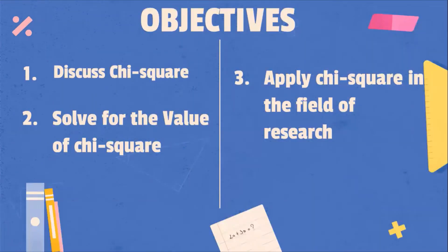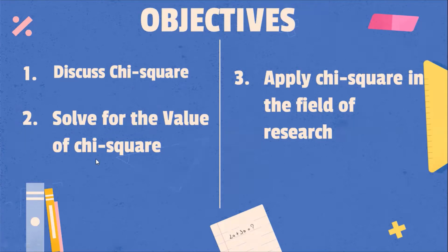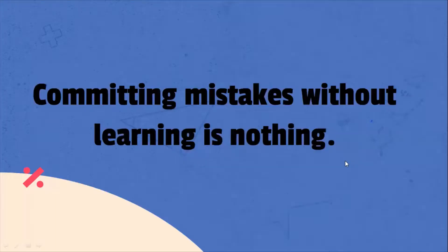What are the objectives of this lesson? Number one, discuss chi-square. Number two, solve for the value of chi-square. And number three, apply chi-square in the field of research.